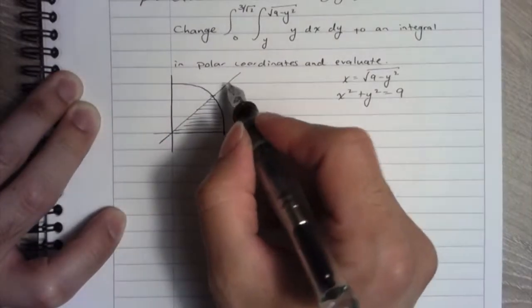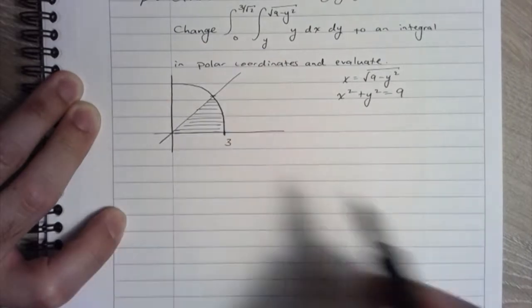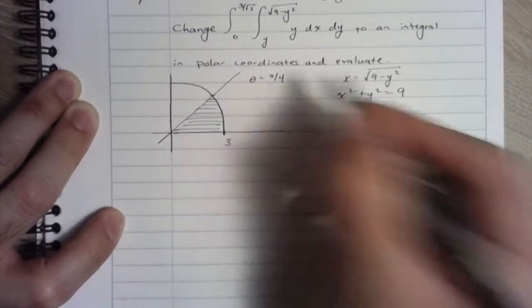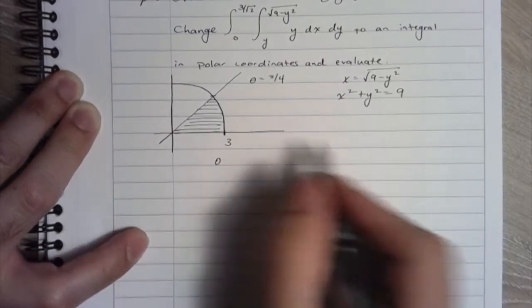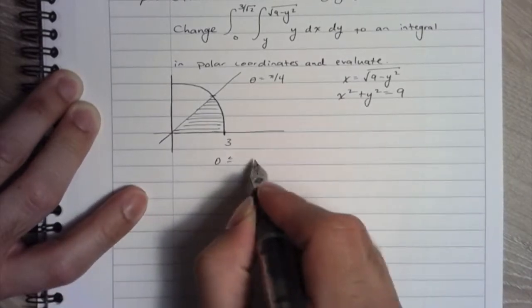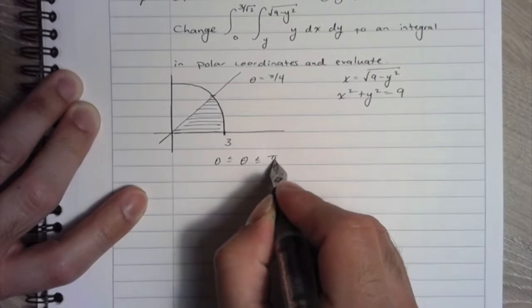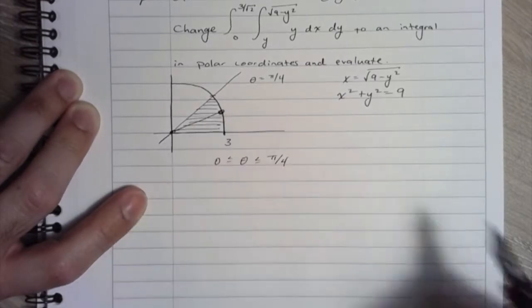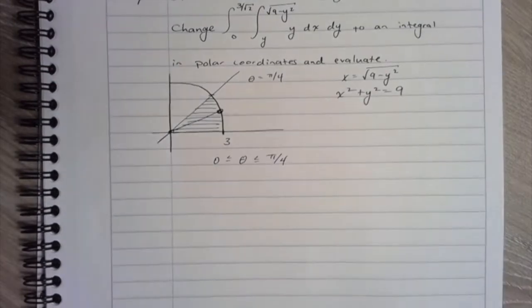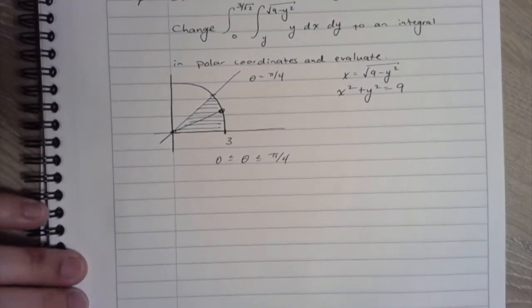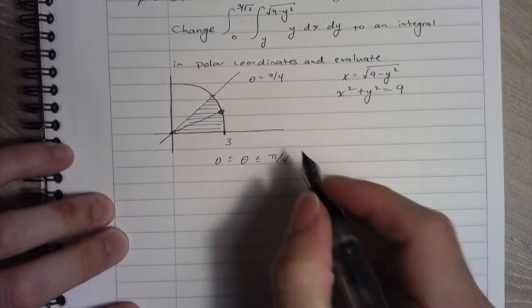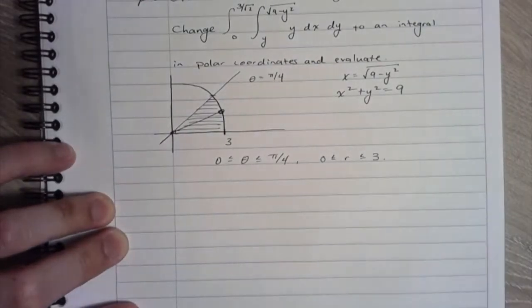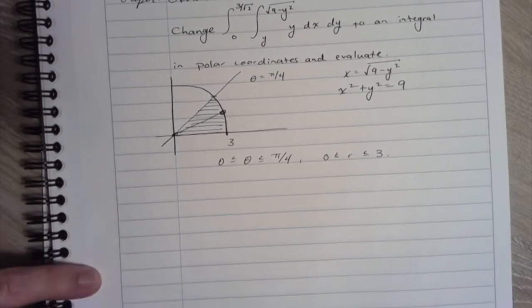So let's see, also you want to notice that this y equals x line corresponds to a theta value of pi over 4. So we can write our bounds for the thetas. And if I look at that shaded area, when I integrate with respect to r, it's going to go from 0 out to 3. So these are going to be our limits for theta and r.